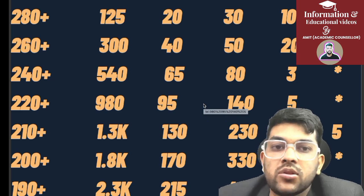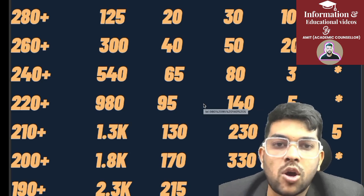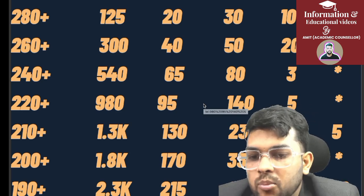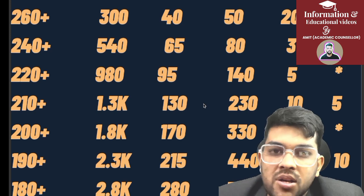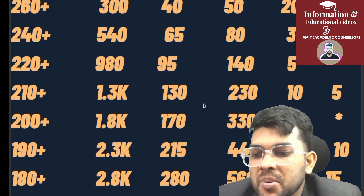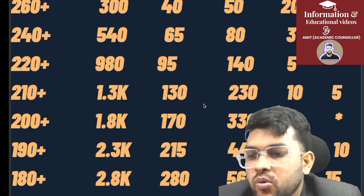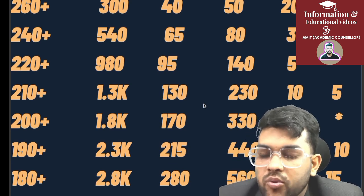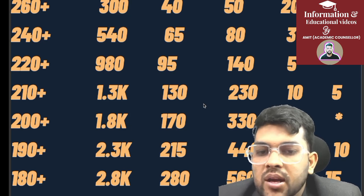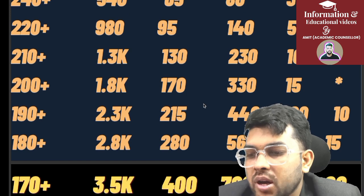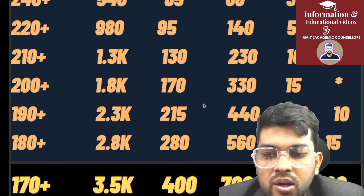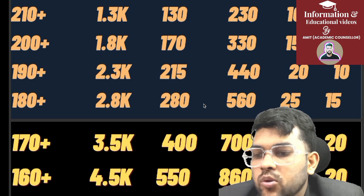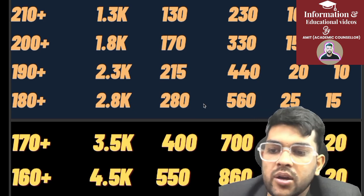JEE Advanced total marks are revealed on the exam date itself — no one knows the exact total in advance, but I'm assuming around 360–370 marks based on recent years' data. For 190 marks: General rank 2,300, EWS 215, OBC 440, SC 220, ST rank 10. For 180 marks: General 2,800, EWS 280, OBC 560, SC 25, ST 15.